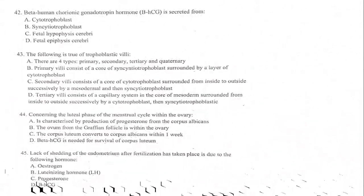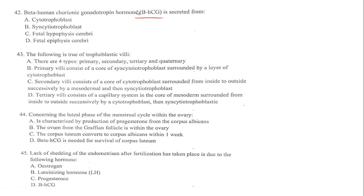Beta human chorionic gonadotropin (beta-hCG) is a very important hormone which helps in the determination of pregnancy. Its presence tells you a person is pregnant; its absence tells you the person is not pregnant. This has made it possible for developers to create pregnancy testers. This hormone is normally secreted by the outer part of the trophoblast, which is the syncytiotrophoblast.